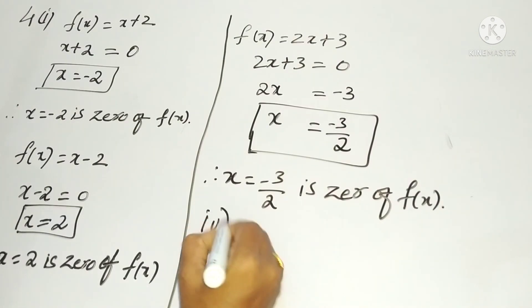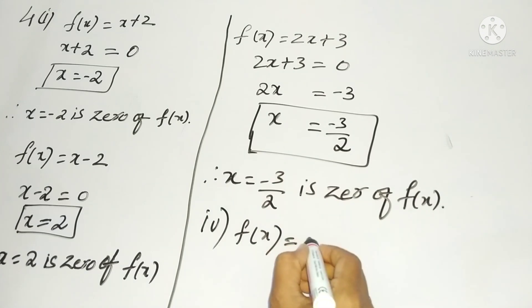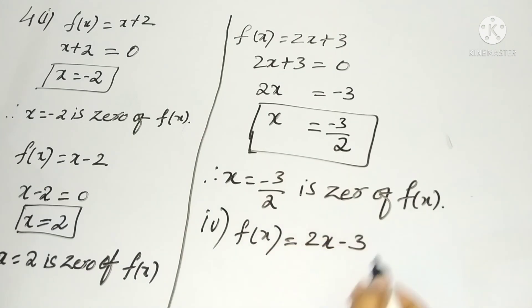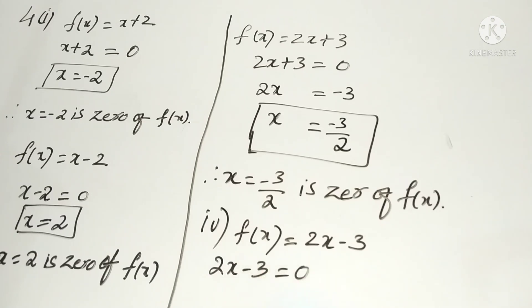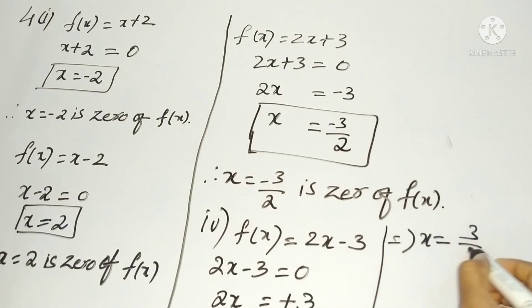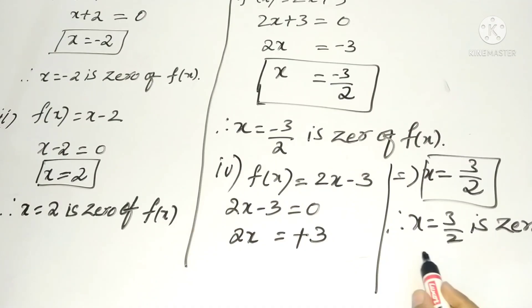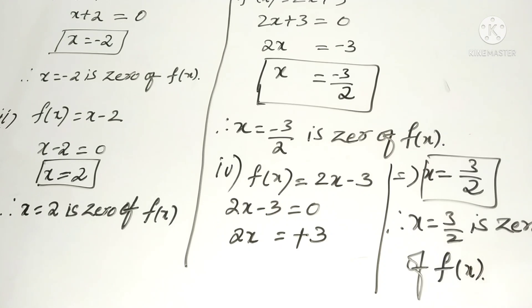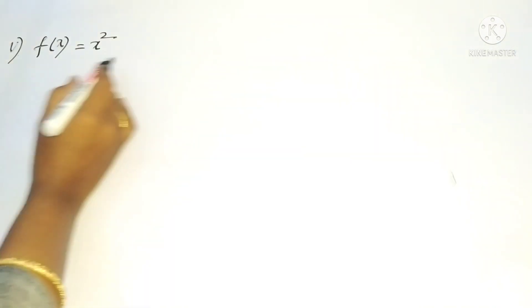Similarly, the fourth problem: f(x) = 2x - 3. Take the polynomial and equalize to zero, then transpose the constants except the variable. Then x = 3/2. Therefore x = 3/2 is the zero of f(x).